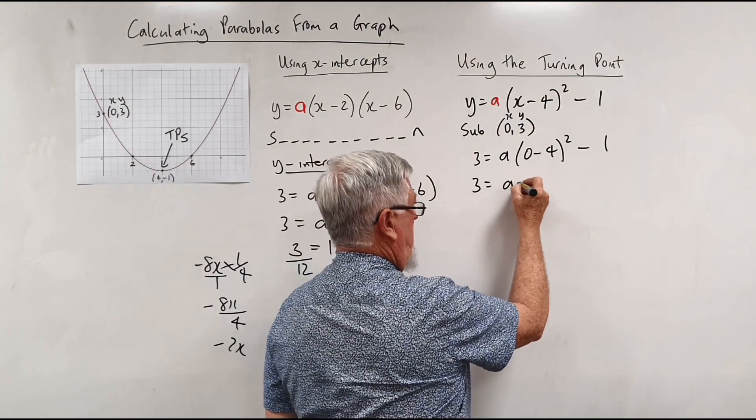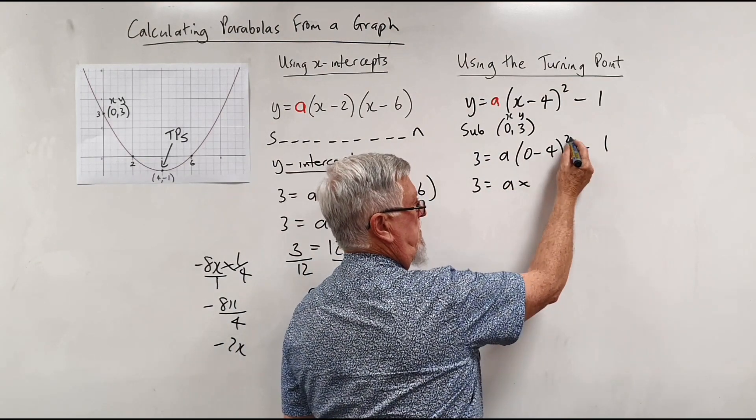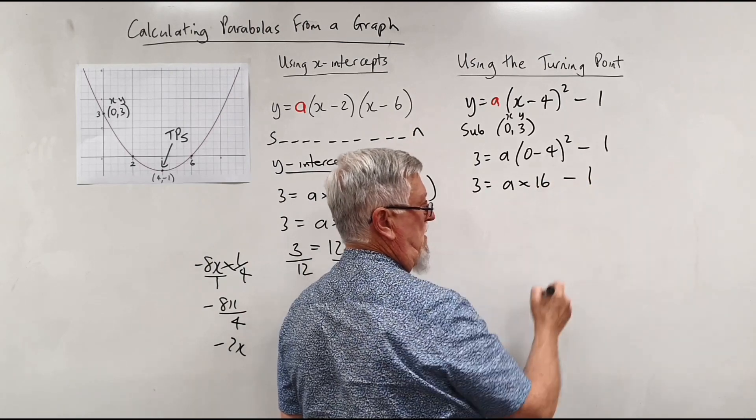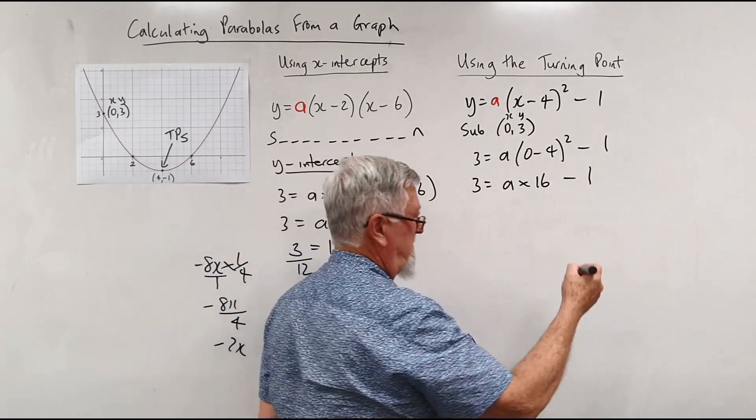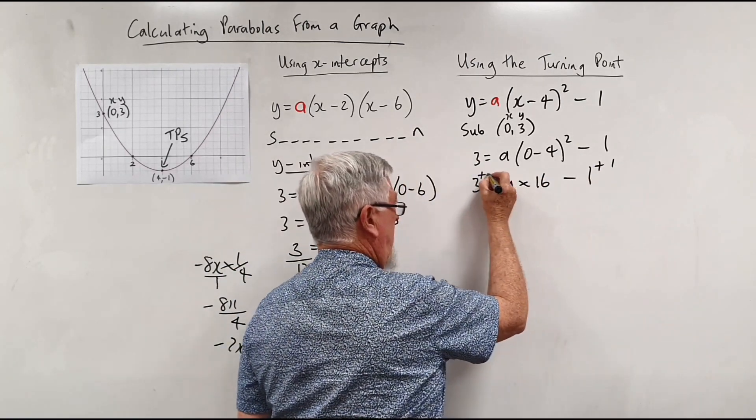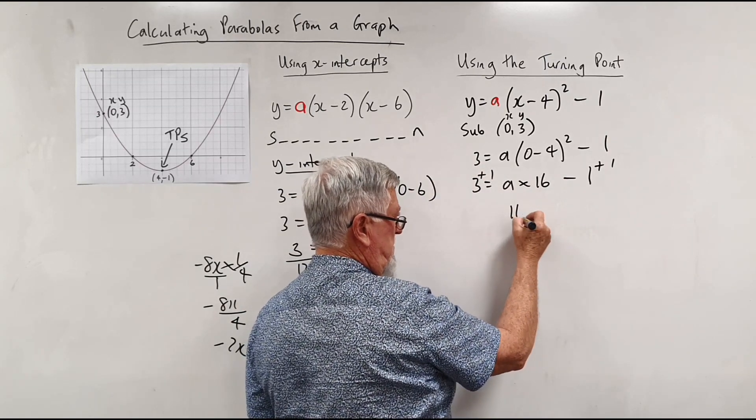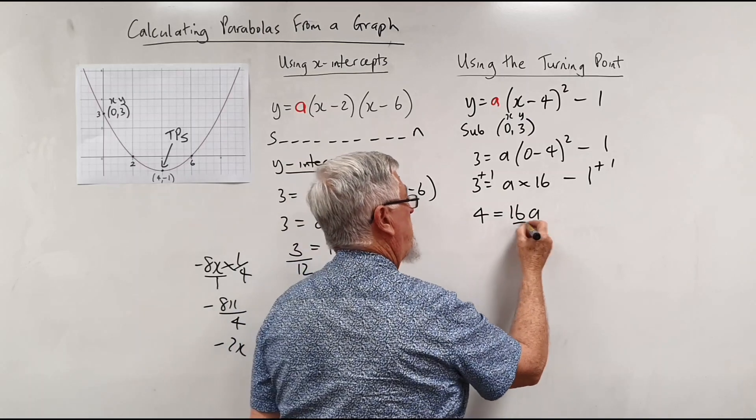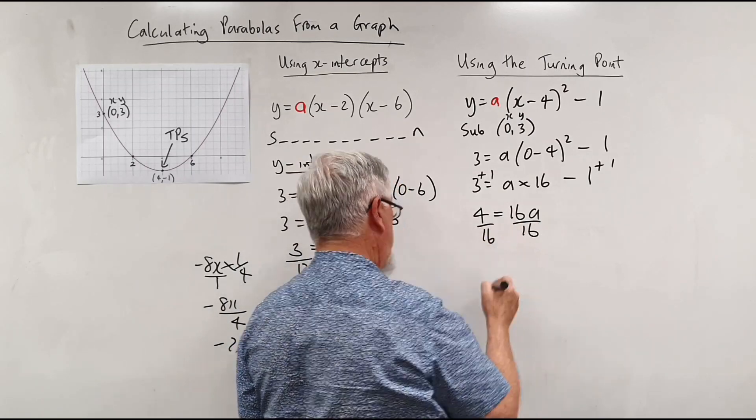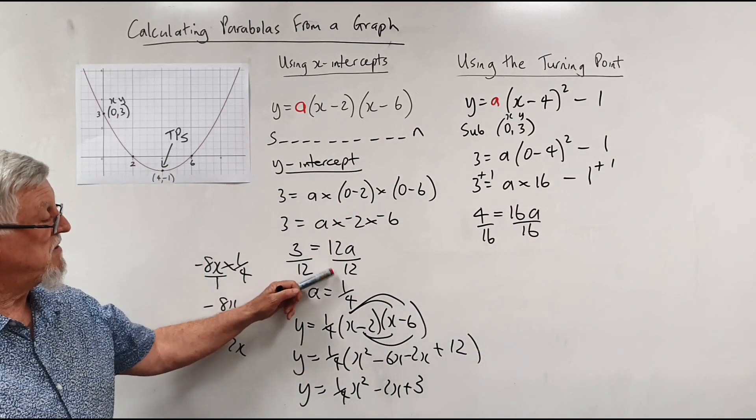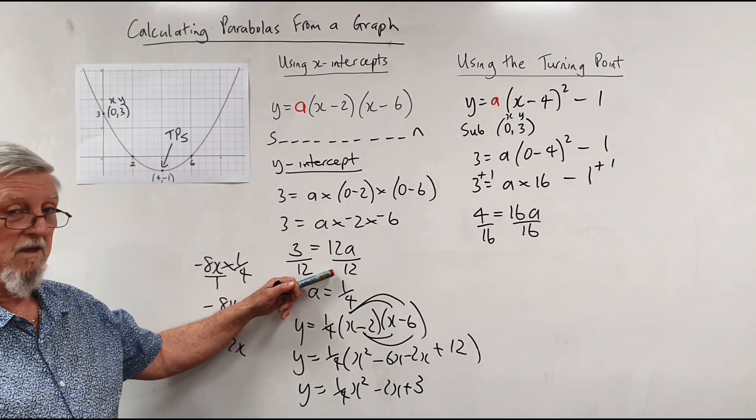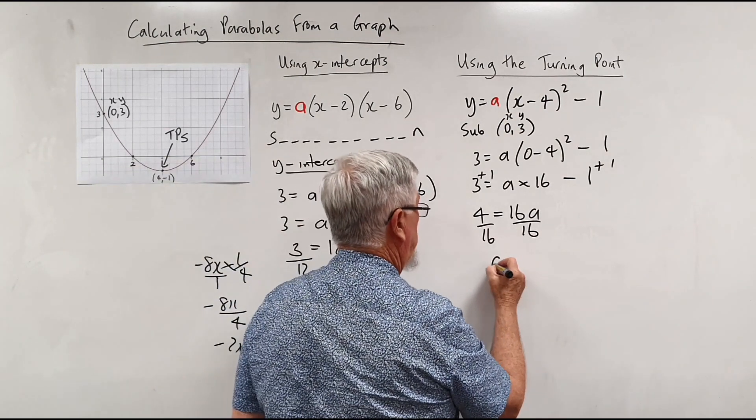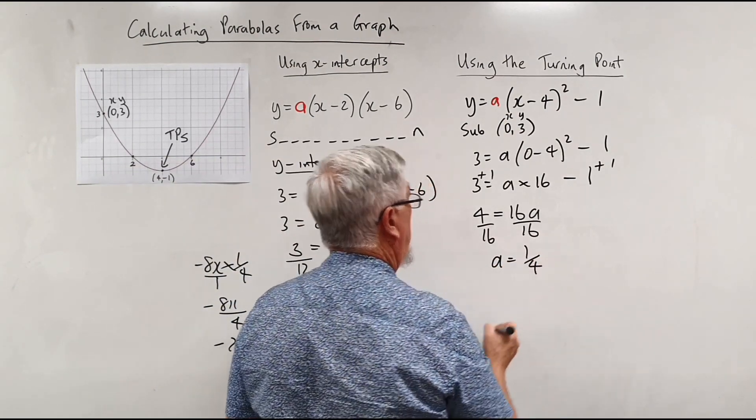Should shortcut this a little bit. 3 equals a times 0 minus 4 squared is 16, minus 1. If I add 1 to that side, add 1 to that side, and I've got 16a equals 4. And now I'm back to divide by 16, divide by 16. Interesting, we're not doing the same numbers. Over here, I was dividing by 12. But we still end up with the same answer of a, a quarter, which is interesting.